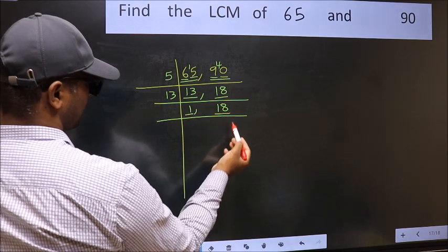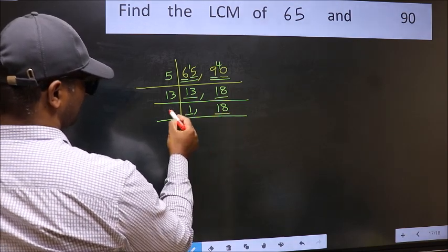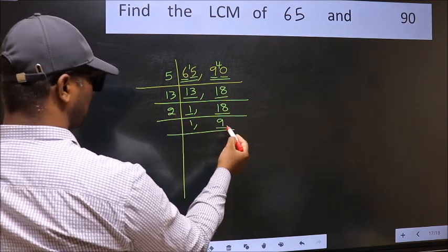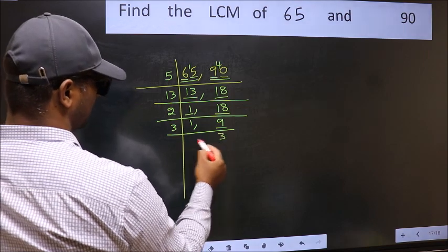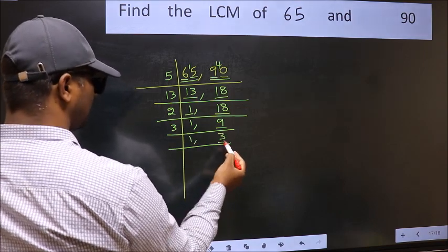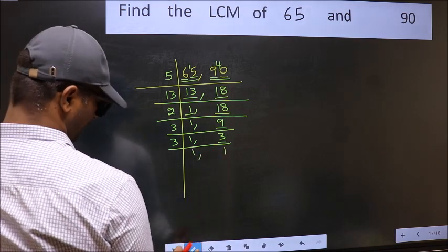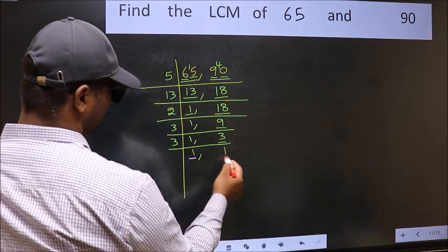So focus on the next number 18. 18 is 2 nines 18. Now here we have 9. 9 is 3 threes 9. Now here we have 3. 3 is a prime number, so 3 once 3. So we got 1 in both the places.